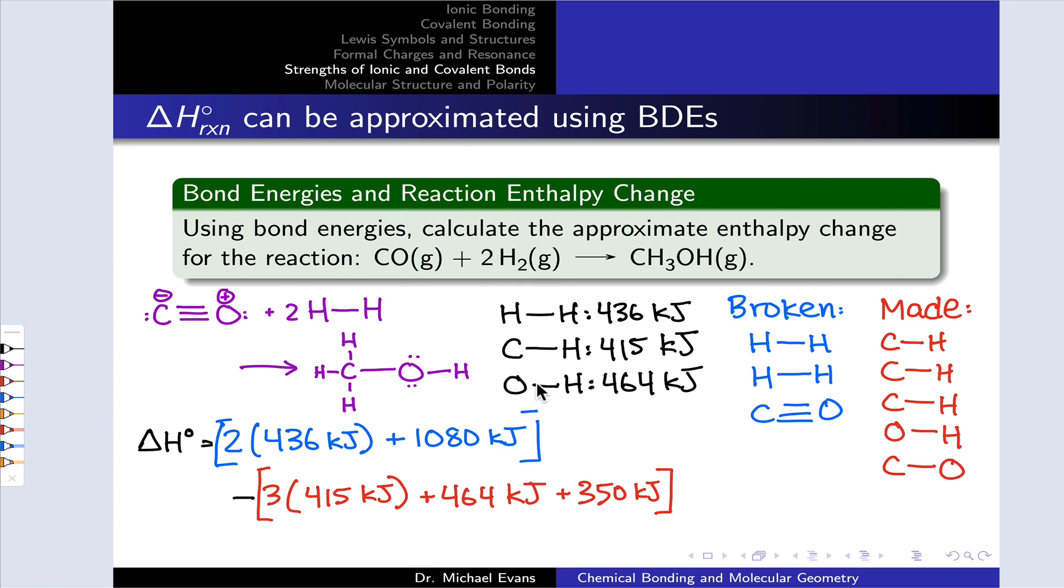Three C-H bonds with a BDE of 415 kilojoules each, 464 kilojoules for the O-H bond, and 350 kilojoules for the CO single bond, which again was not tabulated here, but should have been. So we plug all of these numbers in, do all the multiplication, do all of the care with signs, and we arrive at an overall change in enthalpy of negative 107 kilojoules.